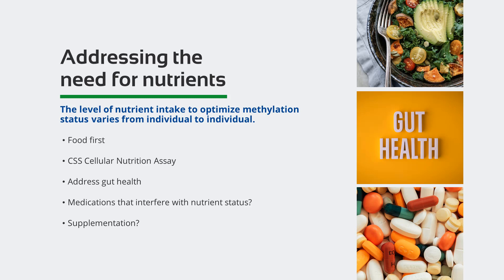The best option to address the need for nutrients would be to address the cellular nutrient status by utilizing the Cell Science Systems cellular micronutrient assay, which assesses sufficiency of all the nutrients that are necessary to support methylation and more — the guesswork is removed. Digestion and gut health is important to address as well. Perhaps enough of the good food sources are being consumed regularly, but poor digestion and absorption may be decreasing the nutrient availability. Supporting digestion and gut health would be necessary. If supplemental nutrients are necessary, practitioner guidance is very important.